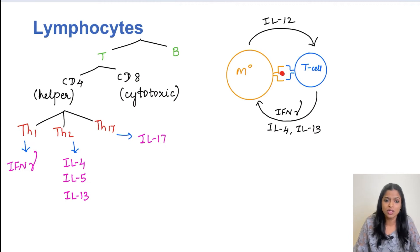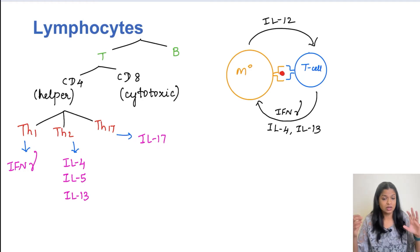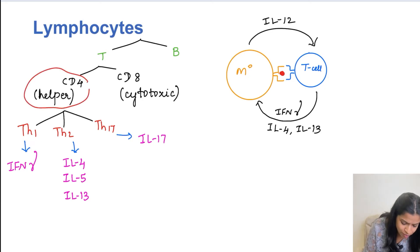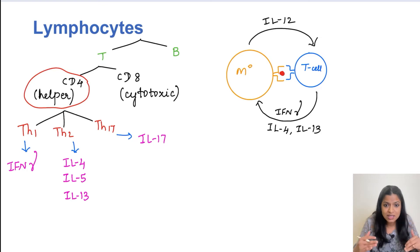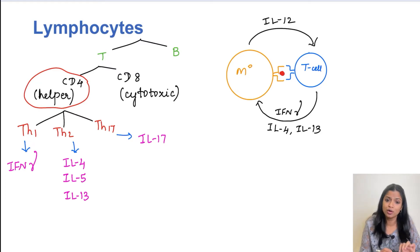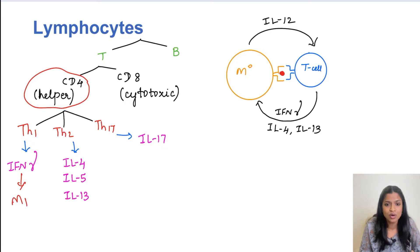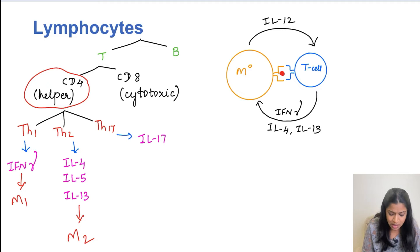The second cell involved in chronic inflammation is lymphocytes, of two types: B lymphocytes involved in antibody production, and T lymphocytes. T lymphocytes are subdivided into CD4 positive helper T cells and CD8 positive cytotoxic T cells. CD4 helper T cells are involved in chronic inflammation, with three subsets: TH1, TH2, and TH17. TH1 produces interferon gamma which activates M1 macrophages. TH2 produces interleukin 4, 5, and 13, activating M2 macrophages. TH17 produces interleukin 17, a chemoattractant for neutrophils and macrophages.